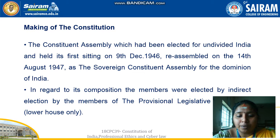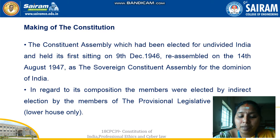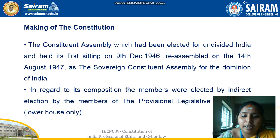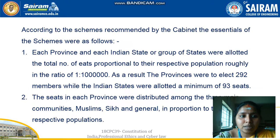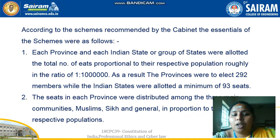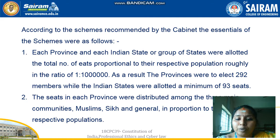The next topic is the making of the constitution. The constituent assembly, which had been elected for undivided India, held its first sitting on 9th December 1946 and reassembled on 14th August 1947 as the Sovereign Constituent Assembly for the domain of India. Members were elected by indirect election by the members of the provisional legislative assemblies, lower house only. According to the schemes recommended by the Cabinet Mission, each province and each Indian state or group of states were allotted a total number of seats proportional to their respective population, roughly in the ratio of 1 to 10 lakh.